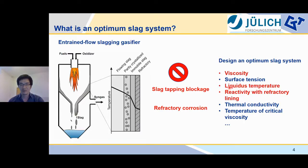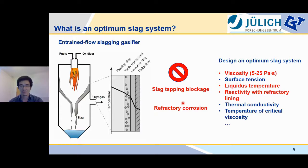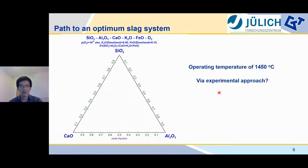Today I will focus on three significant parameters, including viscosity, liquidus temperature, and reactivity with refractory material. For the viscosity, there is a target viscosity range between 5 and 25 Pa·s. That means if the viscosity is too large, slag-tapping blockage may occur, while when viscosity is too small, this may result in more serious refractory corrosion. With considering these parameters, how can we obtain the optimum slag system?